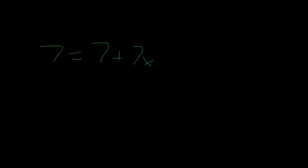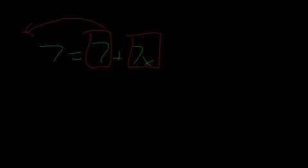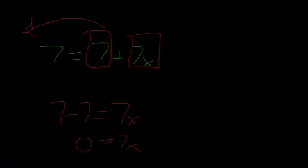Linear equations are also quite easy — you might have heard them called one-step or two-step equations. Let's do one: 7 + 7x = 7. The first step is to isolate the x. We subtract 7 from both sides: 7 - 7 = 7x, so 0 = 7x. Then divide both sides by 7: x = 0.